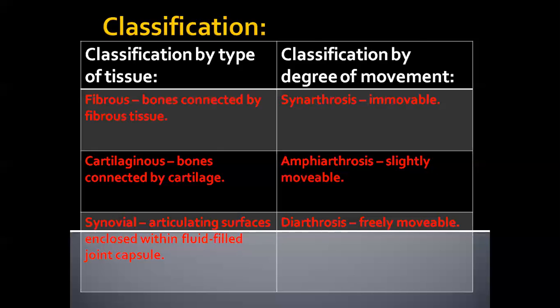To summarize: synarthrosis, amphiarthrosis, and diarthrosis are the classifications according to degree of movement. Fibrous joints, cartilaginous joints, and synovial joints are the types according to the type of tissue connection. Fibrous joints are always immovable, cartilaginous joints are slightly movable, and synovial joints are freely movable.